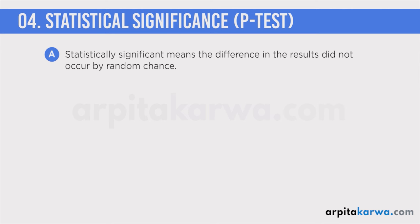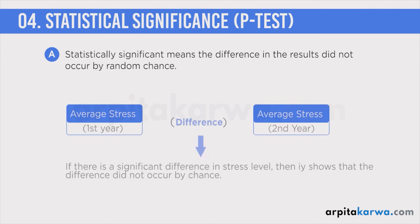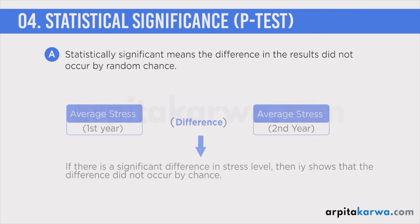Suppose I want to measure the stress level of students studying in first year and second year. I conduct a stress test and find that there is a significant difference between the stress level of first year and second year students — the stress level is higher in second year students. The question in my mind is whether this difference is because of some random chance or is it actually because there lies a real difference in stress between students studying in first and second year. So I conduct a test which is known as the P-test.